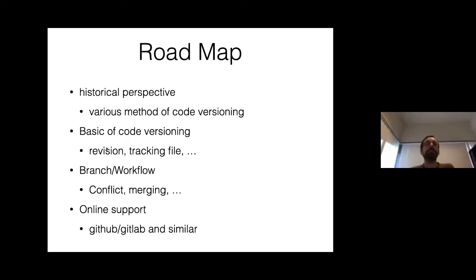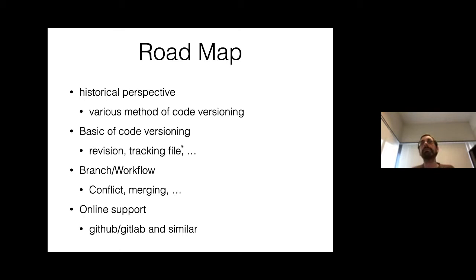There are four parts to these lectures: first, a historical perspective explaining what code versioning is and what tools exist; second, Git basics covering revisions, versions, and file extraction; third, workflow covering multiple revisions with branches for development, release, and features; and fourth, online collaboration using GitHub and GitLab.